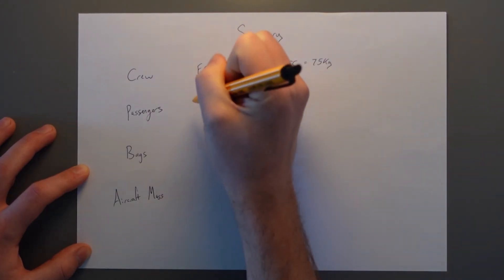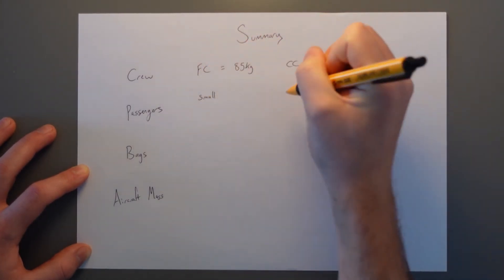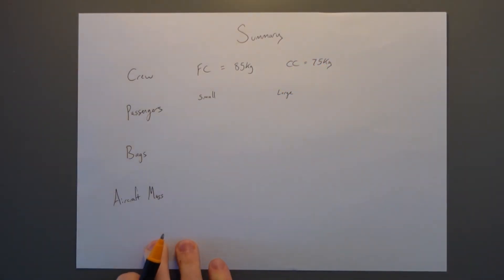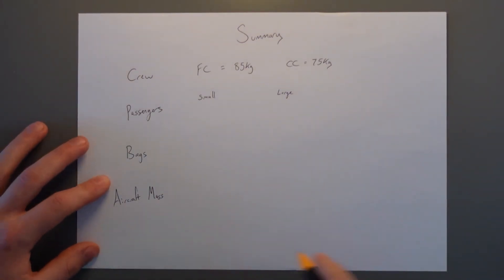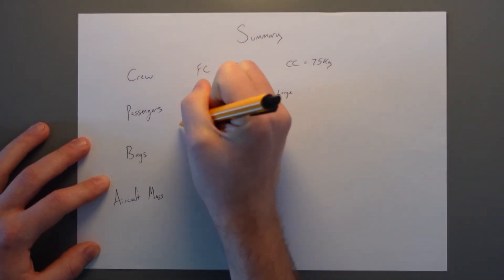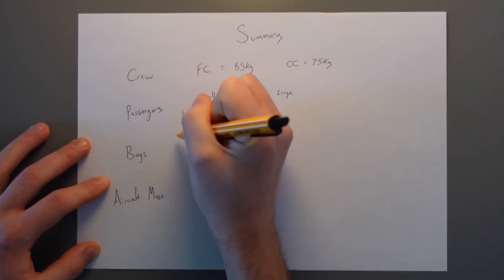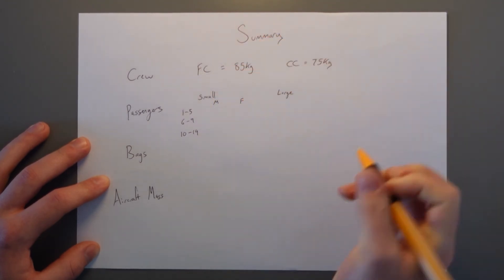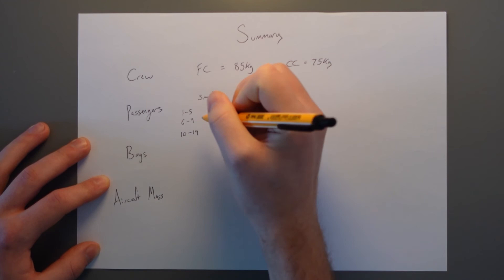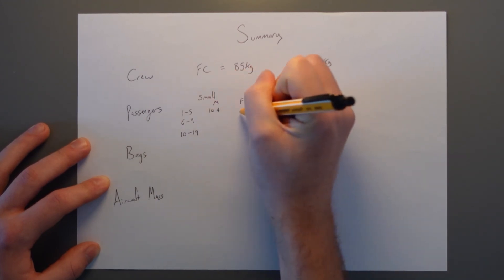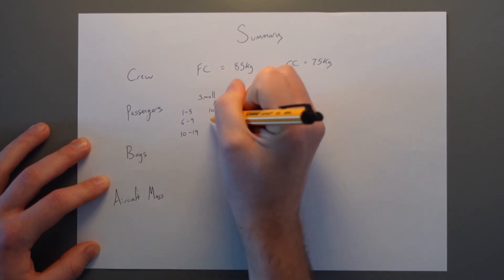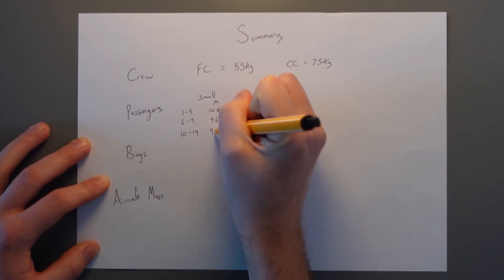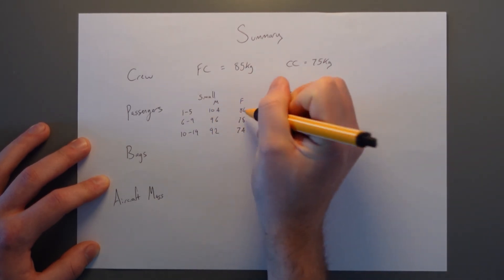Passengers. This is the big one. So we've got small and also large aircraft. From there, we can break it down into one to five seat small aircraft, six to nine and 10 to 19. We've got weights for male and female. And for one to five seats, the male is 104 kilograms, female 86. Six to nine is 96 and 78. And 10 to 19, 92 and 74.